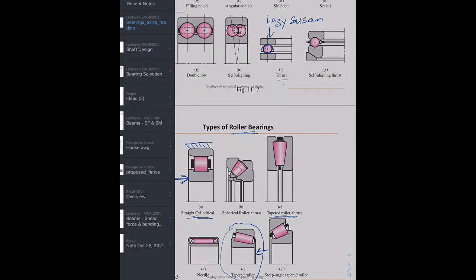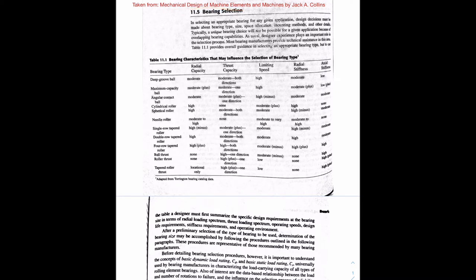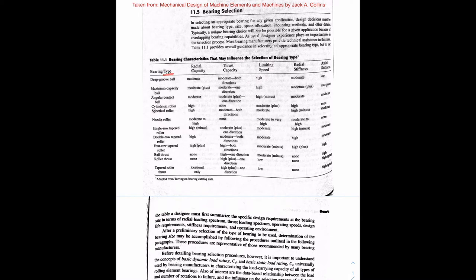The next section is the bearing selection PDF, taken from the textbook Mechanical Design and Machine Elements by Jack Collins. This was selected because it has a nice procedure to follow for sizing bearings. We start with a table that goes through bearing type and what each can be used for.